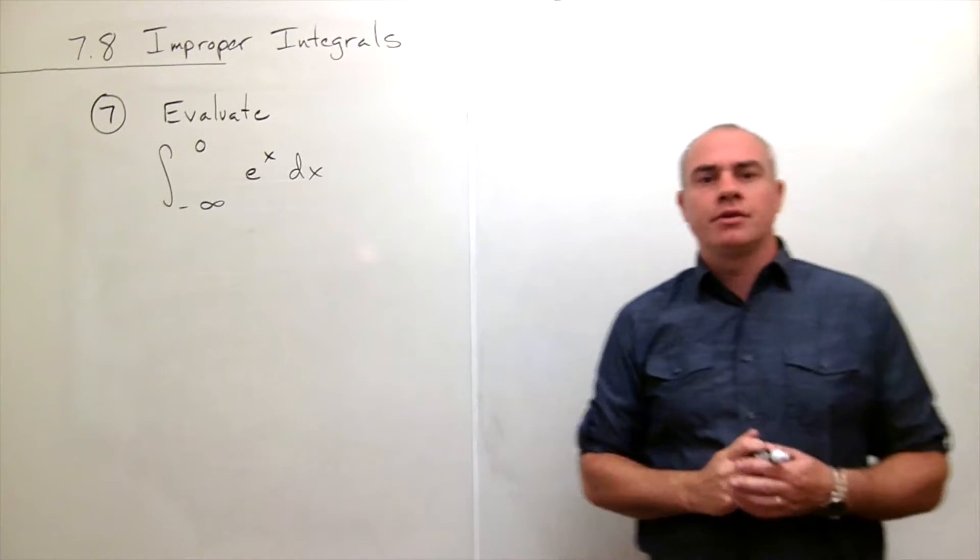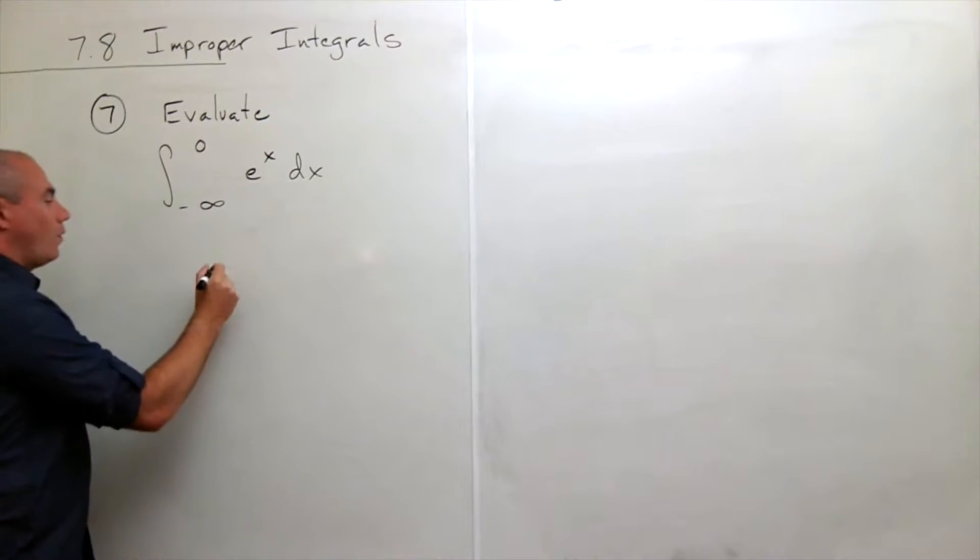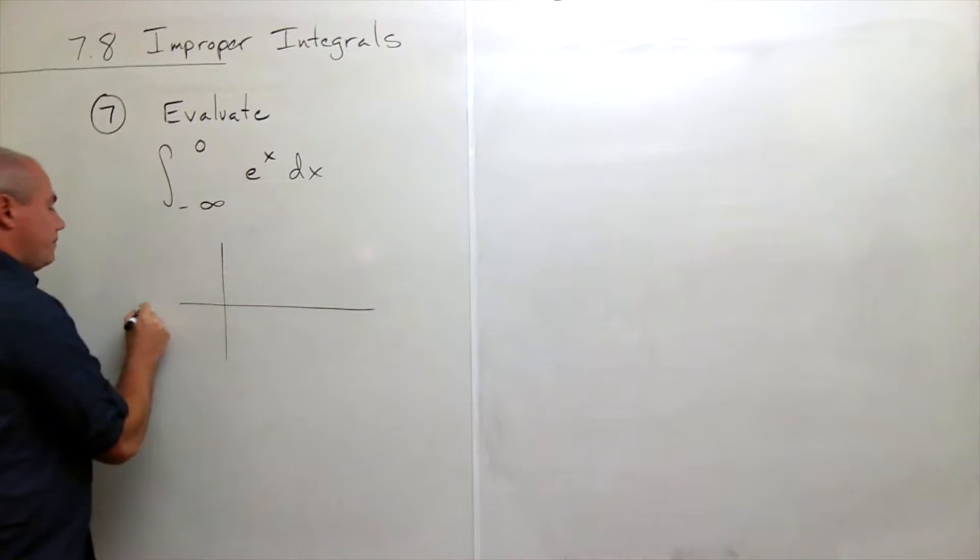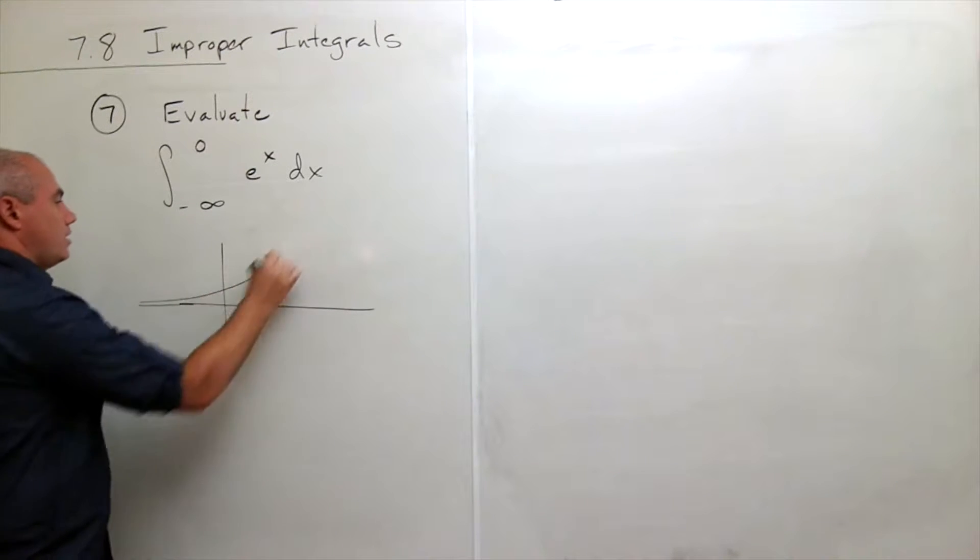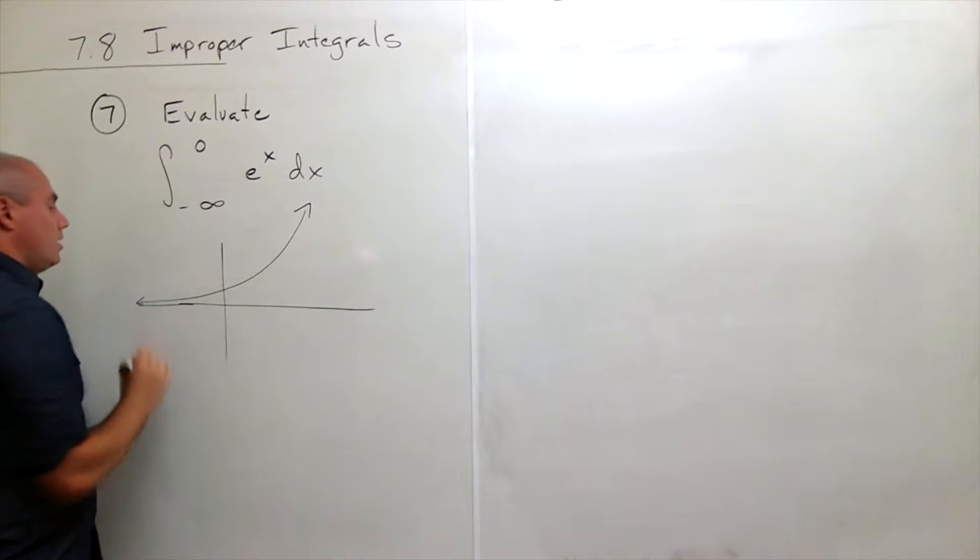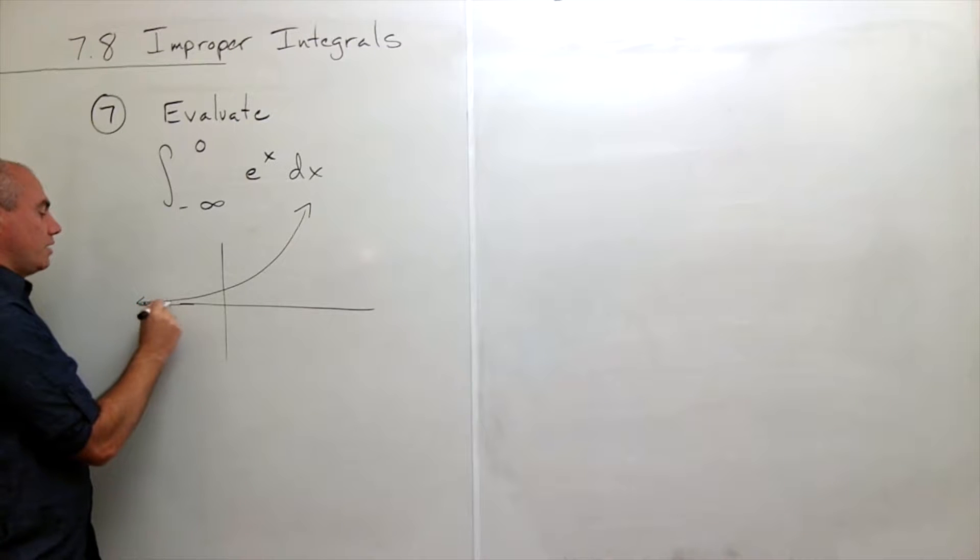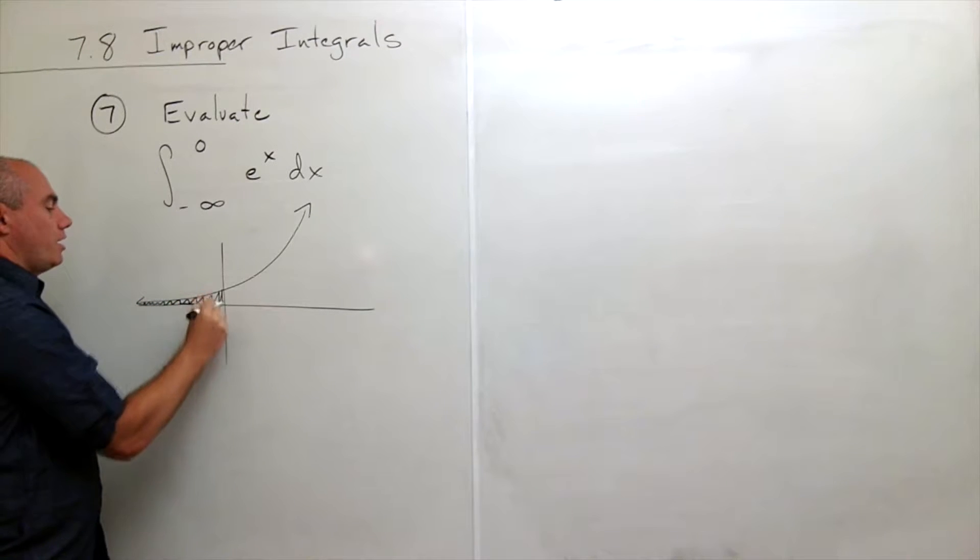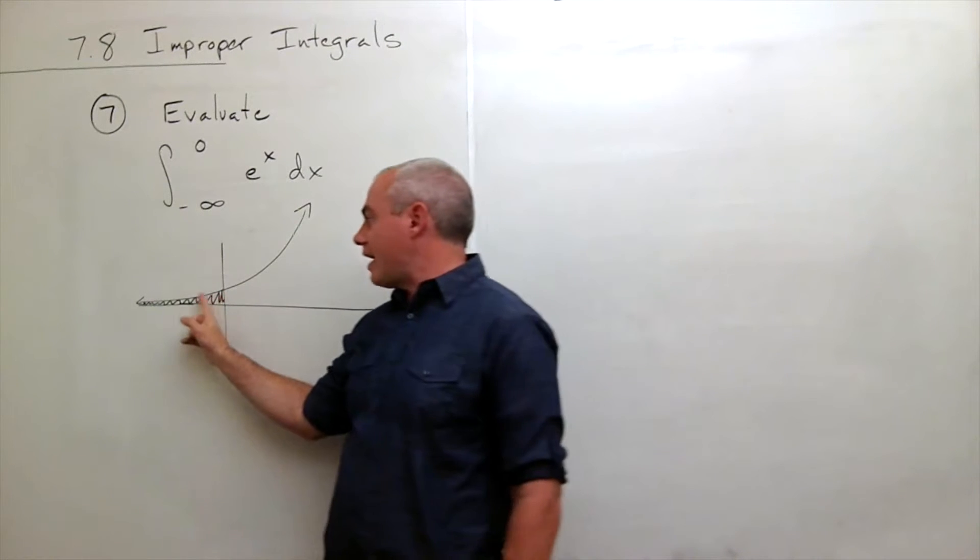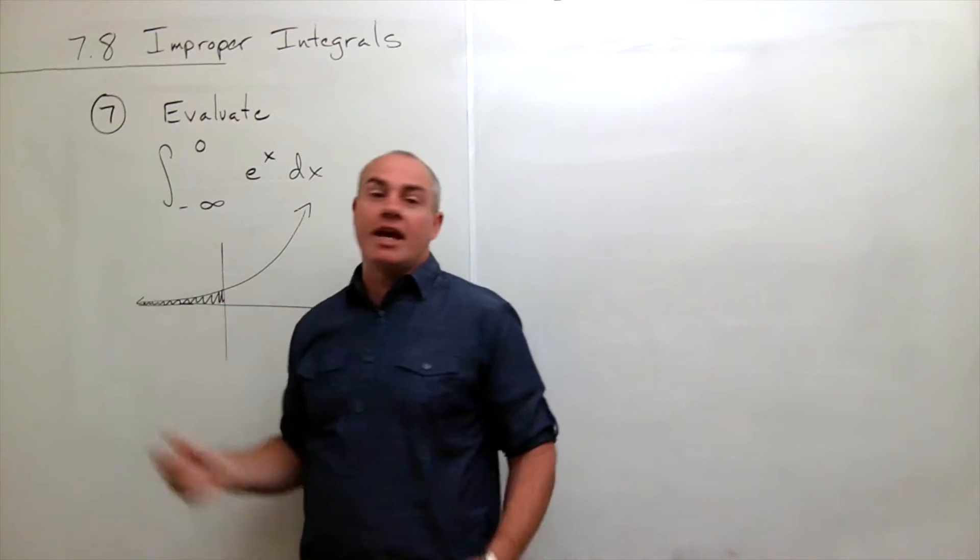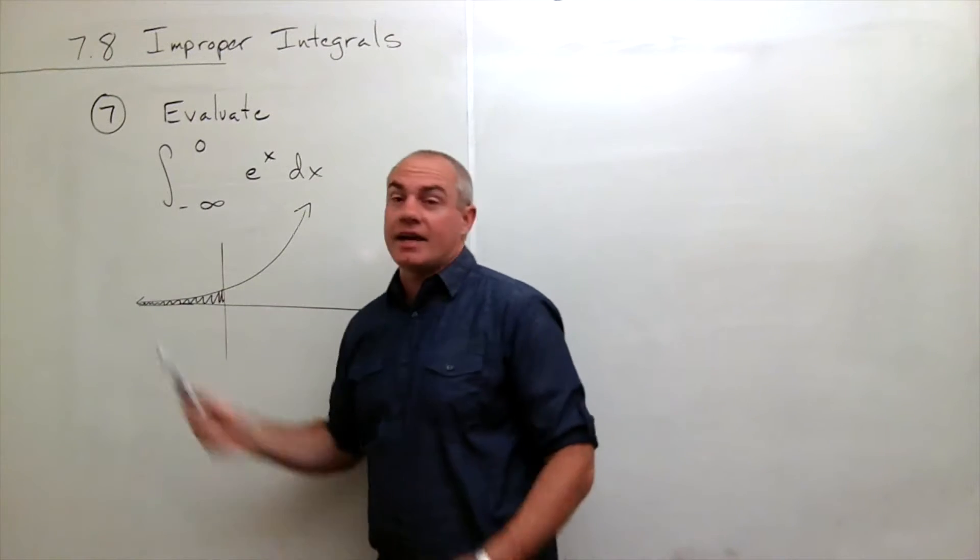So first of all, if you want to just have a feel for what we're actually doing here, here's my xy axis. e to the x looks something like this, and we're integrating from negative infinity to zero, so we're finding the area in that shaded region, in other words, this tail that goes off to negative infinity. So we'd like to find out how much area is there in that tail.